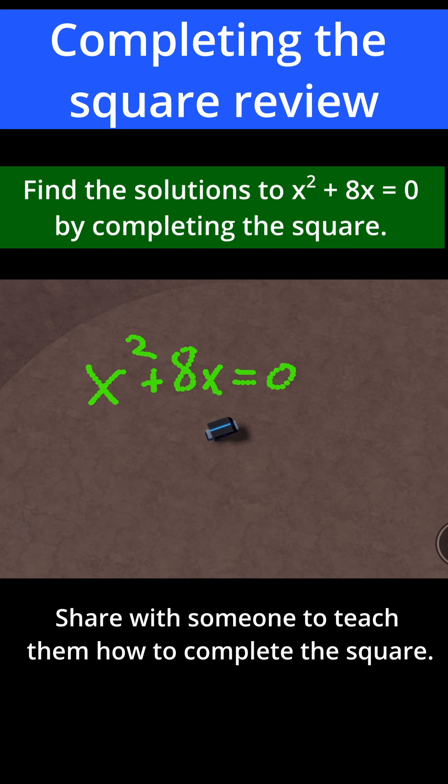This first problem says x squared plus 8x is equal to 0. To do this, we need to complete the square. To complete the square, you first take the coefficient on the x term. Here, that coefficient is 8.